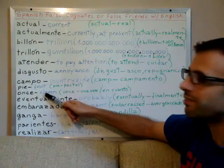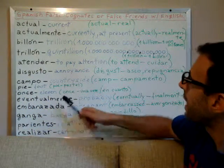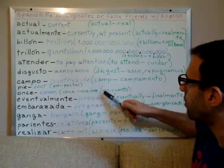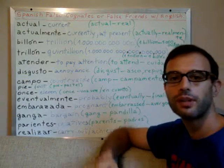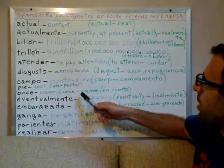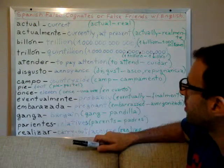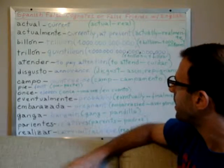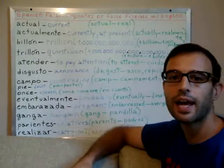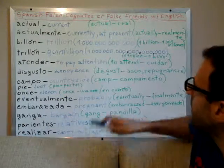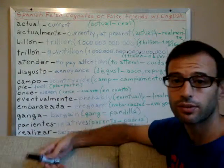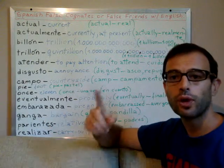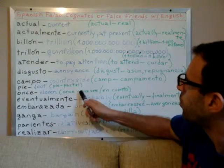'Once' is written exactly the same as the English word 'once,' but 'once' in Spanish means eleven — the number eleven. The English word 'once' in Spanish translates as 'una vez' or 'en cuanto,' depending on the situation. For example, 'once I have received this' would be 'en cuanto haya recibido esto.' When we mean 'once' in the sense of 'one time,' then it is 'una vez.'